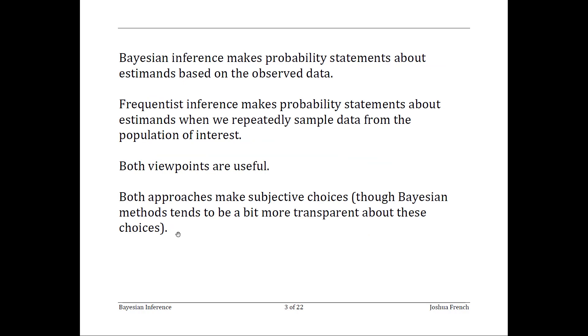Just to highlight the differences in a slightly different way, frequentist statistics makes probability statements about parameters when we treat the data as random but the parameter as being fixed. On the other hand, Bayesian statistics makes probability statements about parameters when we treat the data as being fixed and the parameter as being random.